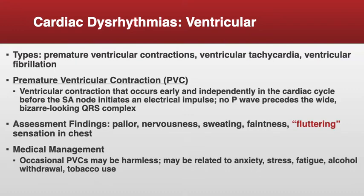Now we'll talk about ventricular dysrhythmias — PVCs, ventricular tachycardia, and ventricular fibrillation. PVCs are premature ventricular contractions, when contraction of the ventricle occurs early and independently before the SA node initiates the electrical impulse — there's no P wave in front of this wide, bizarre-looking QRS. Assessment findings include pallor, nervousness, sweating, faintness, and a fluttering sensation in the chest. Occasional PVCs can be harmless, related to anxiety, stress, fatigue, alcohol withdrawal, tobacco use, or caffeine.